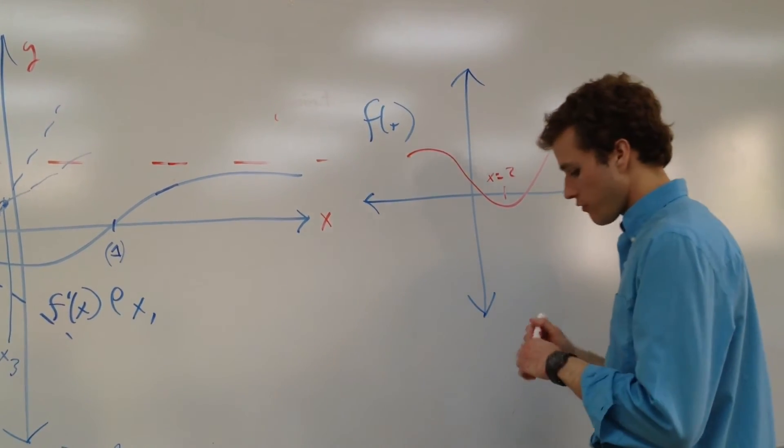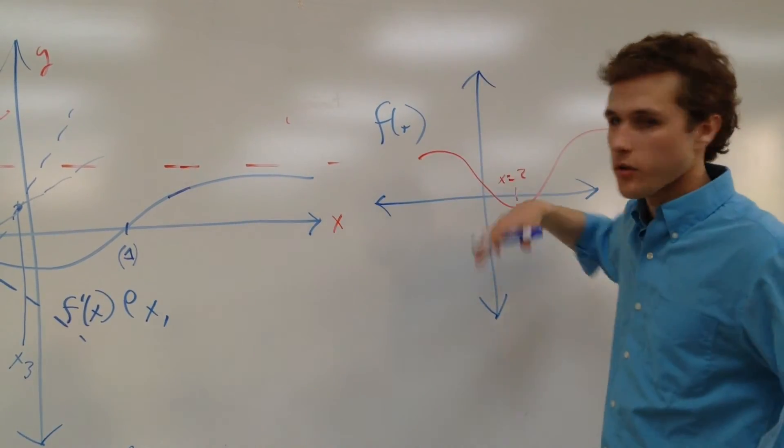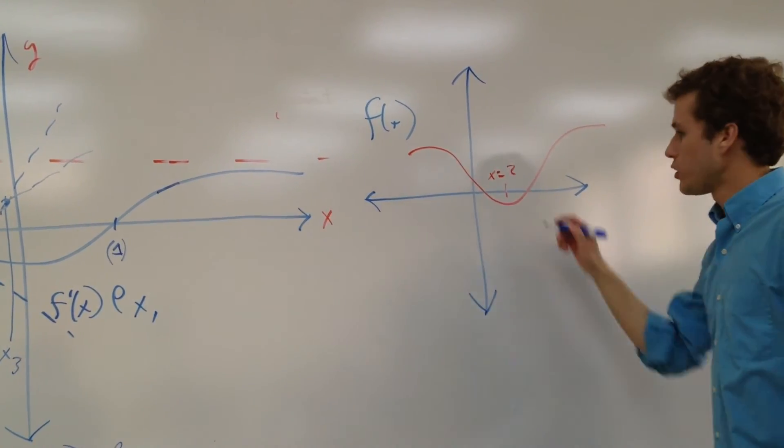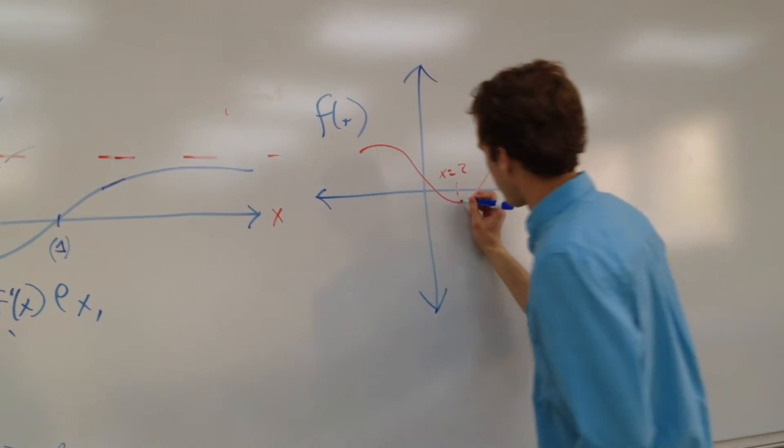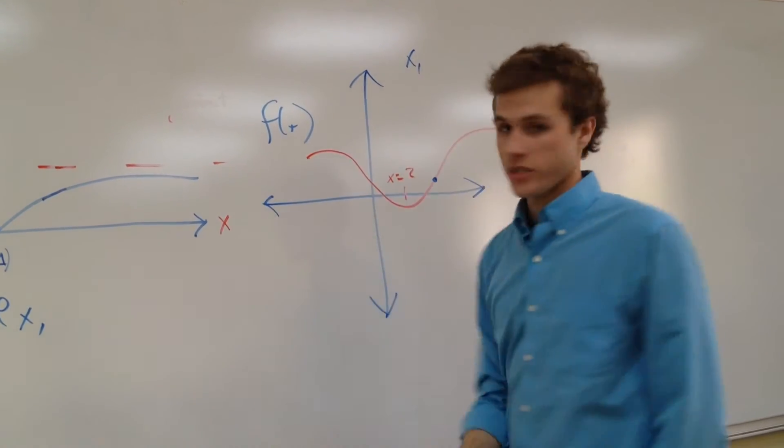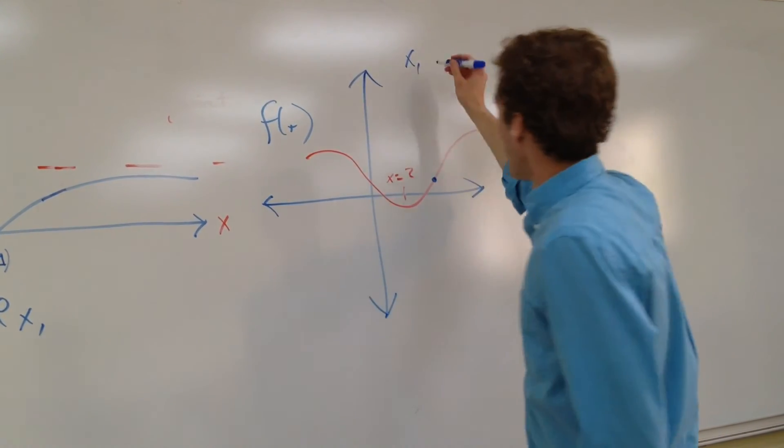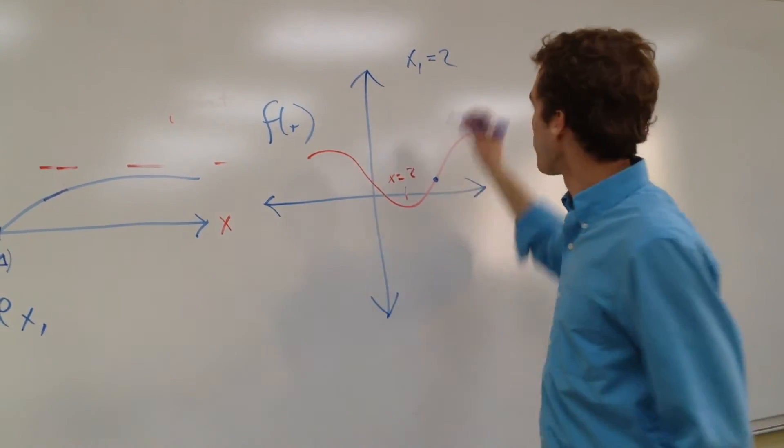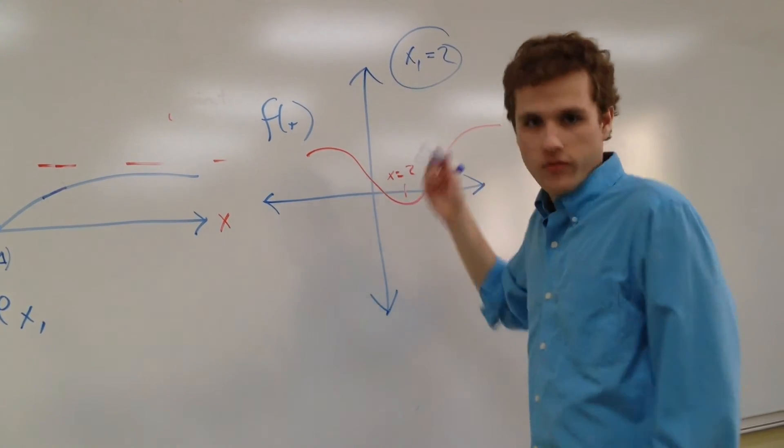And what if this value right here, this is x equals 2, okay? And what if we're saying use Newton's method to approximate the value of this point on the function, like right here, using x1, which is the first value of x that we plug in, of x1 equals 2? Well, okay, fine, let's do that.